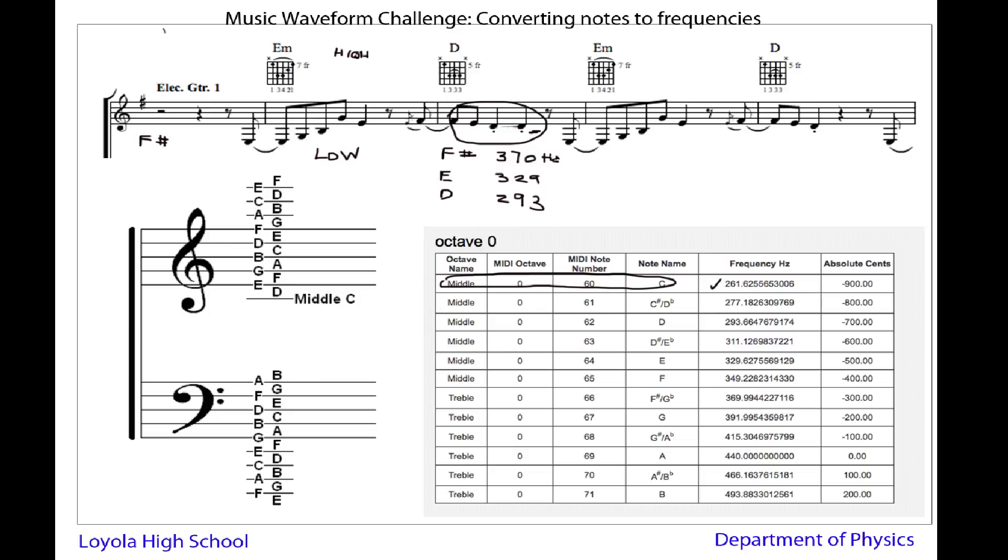And these are all frequencies in hertz. Number of oscillations or waves per second. So these are the numbers you need to know to type into your Excel waveform spreadsheet to create your waves for the specific notes in your bar of music.